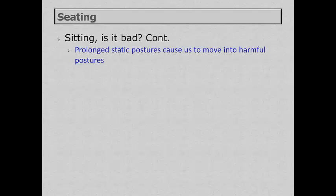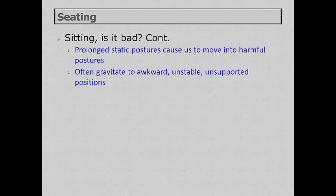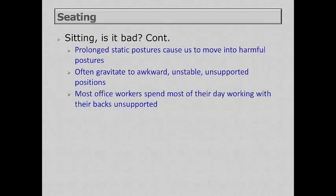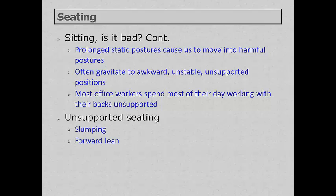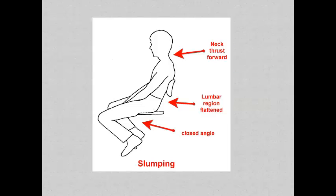Additionally, sitting in static postures for prolonged periods will often lead us to move to awkward, unsupported, and unstable positions. Most office workers spend a majority of their day working with their backs unsupported. Unsupported seating can lead to slumping and leaning forward. When slumping, we tend to thrust our neck forward, the lumbar region flattens, and we have a closed angle around the knee.